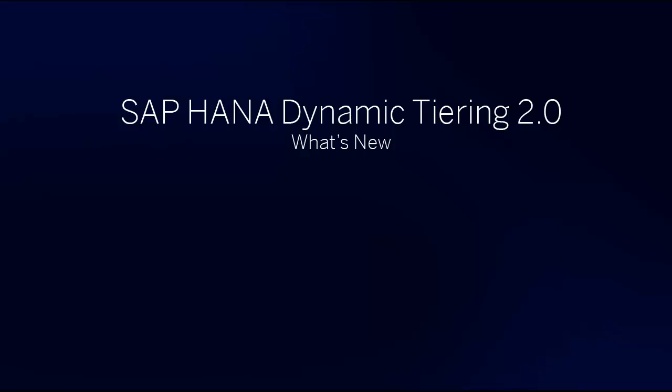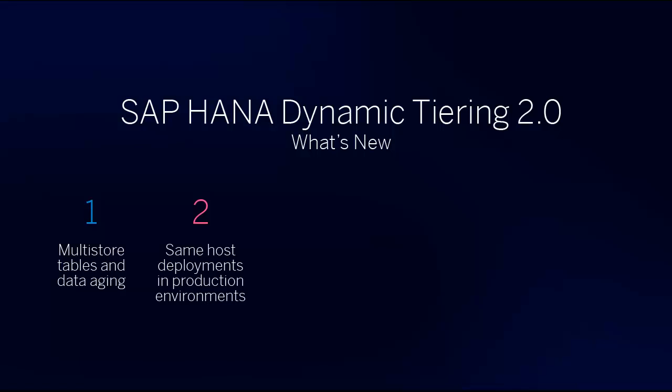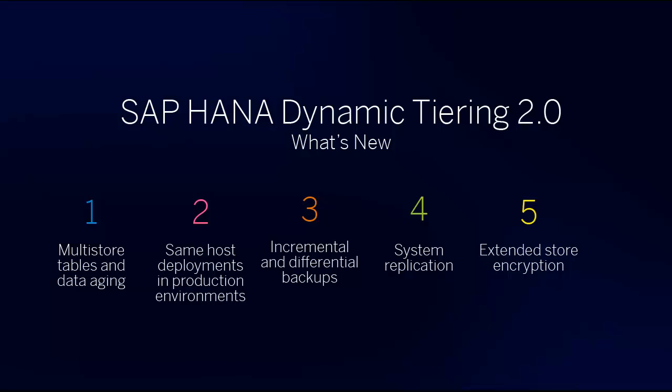SAP HANA Dynamic Tiering 2.0 introduces several new features. These include multi-store tables and data aging, and the ability to do same host deployments in production environments. It also includes incremental and differential backups, system replication, and extended storage encryption. Though the functionality of the last three features is not new to SAP HANA, it is new in the sense that it is now extended to Dynamic Tiering.